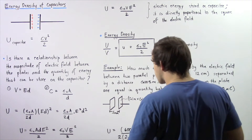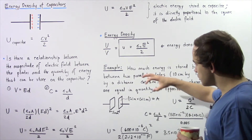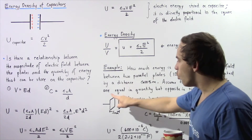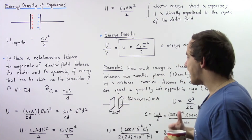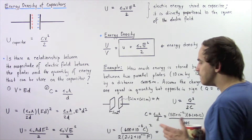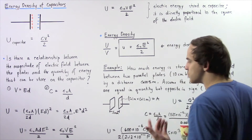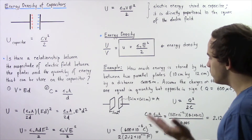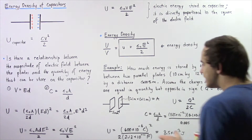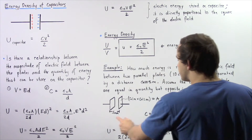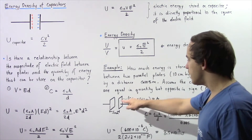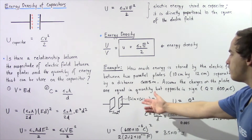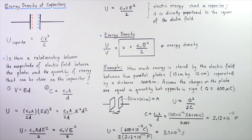Let's begin by drawing our diagram. We have two parallel plates — one with a positive charge and one with a negative charge. A voltage difference exists between them, so there is an electric field in this area assumed to be constant. The distance between them is 5 mm and the area of either plate is 0.1 meters multiplied by 0.12 meters.